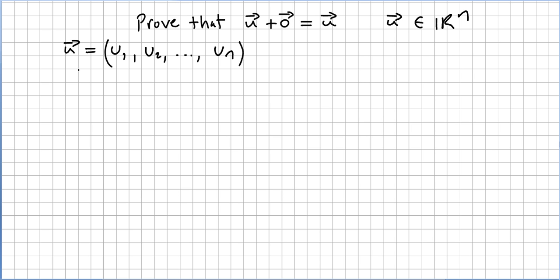So vector u will have components u1, u2 till u n and vector 0, please check the previous videos for this, is defined as the vector where all components are 0.